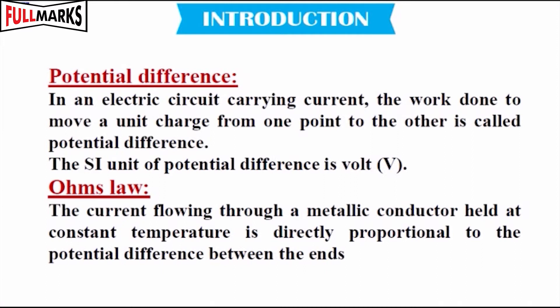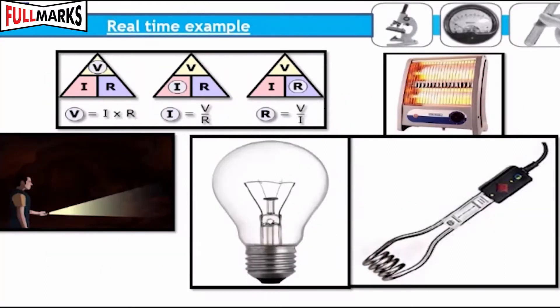Introduction. Potential difference: In an electric circuit carrying current, the work done to move a unit charge from one point to the other is called potential difference. The SI unit of potential difference is volt. Ohm's law: The current flowing through a metallic conductor held at constant temperature is directly proportional to the potential difference between the ends.